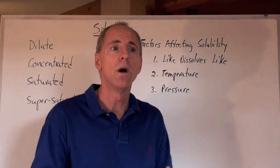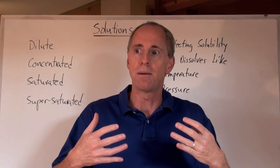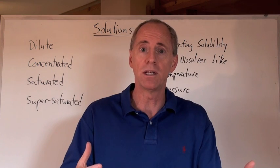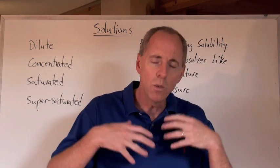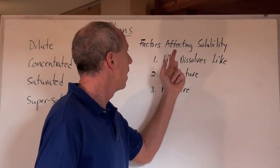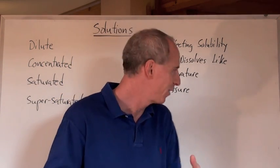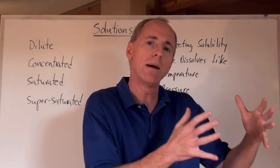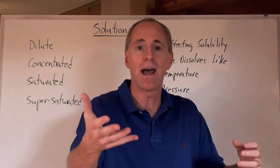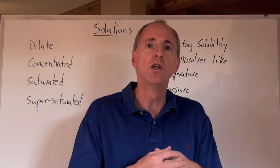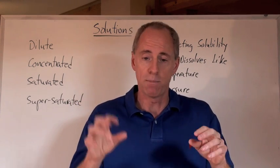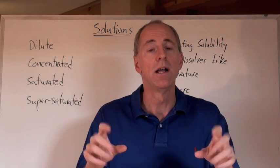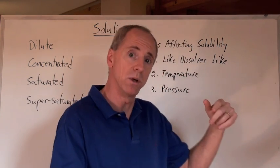How about factors that affect solubility? Solubility is the ability of a chemical to dissolve — and it's also the molar solubility, the point at which you can't dissolve any more solute into a solvent at a given temperature. Like dissolves like. A polar substance and a non-polar substance don't mix together very well — at all. So we say that they are immiscible with one another.